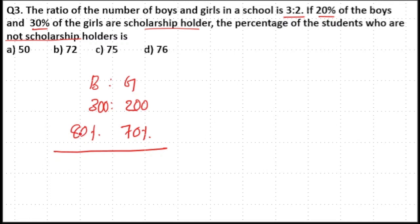Now 80 percentage of 300. Here 10 percentage of 300 is 30 and 1 percentage is 3. That means 80 percentage is 80 into 3, 240. And 70 percentage of 200. Here 10 percentage of 200 is 20, 1 percentage is 2. That means 70 percentage is 70 into 2, 140.